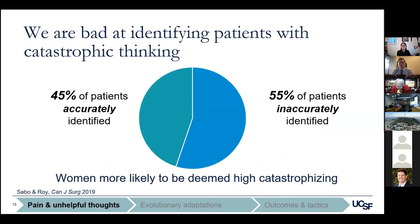Even though these types of unhelpful thinking are prevalent, we aren't always able to accurately identify these patients based on clinical observations. One study of 203 new patients presenting to 11 fellowship-trained surgeons with a mean of 18.4 years of experience found that of patients with high catastrophic thinking scores, less than half were correctly identified. Notably, women were more likely to be categorized as high catastrophizers by an odds ratio of two, with no impact of surgeon sex or experience on accuracy.